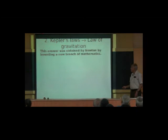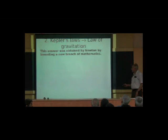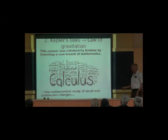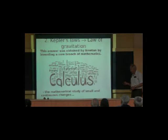The answer that Newton got by solving this equation was by inventing a new branch of mathematics: calculus — the mathematical study of small and continuous changes. That is the definition of calculus. Newton invented calculus in order to solve the problem of planetary motion.